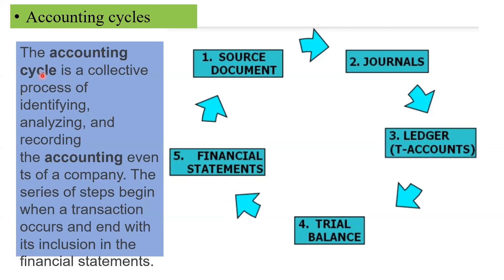The accounting cycle is a collective process of identifying, analyzing, and recording the accounting events of a company. First we identify an event — buying and selling. Then we analyze: how much money was spent, what things were bought, how much product is there. Then we record it — first in the journal, then in the ledger, then trial balance, then financial statement. These five things are very important.